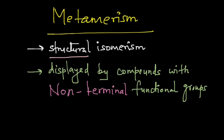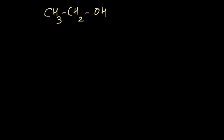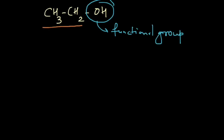The important point to note is that metamerism is displayed by compounds with non-terminal functional groups. Let's focus on this molecule — I can break it down into two parts: this section is the functional group, and this section over here is the carbon chain. The carbon chain is present on only one side of the functional group, so we call these terminal functional groups.